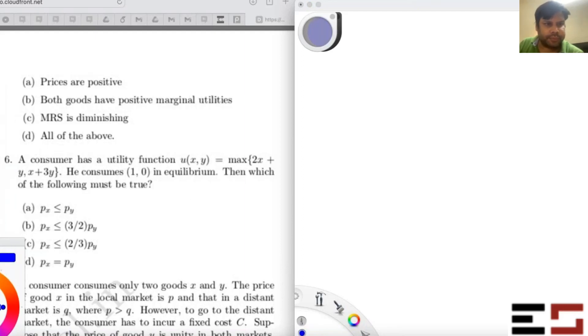Okay, let's do this one. So u(x,y) equals max of 2x plus y comma x plus 3y, and he consumes (1,0) in equilibrium. You have to figure out what must be true about the price ratio px by py.